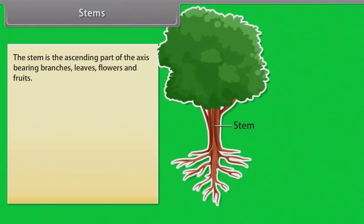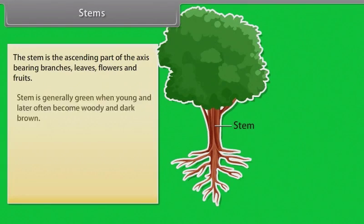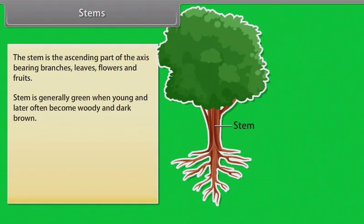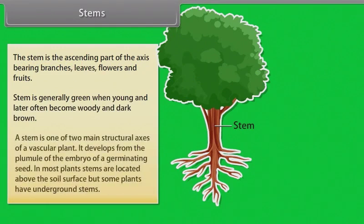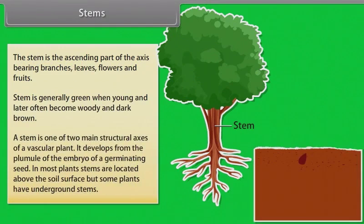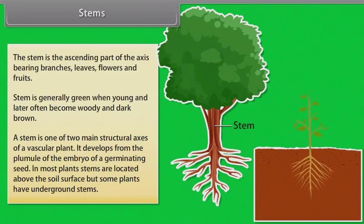The stem is the ascending part of the axis bearing branches, leaves, flowers and fruits. Stem is generally green when young and later often becomes woody and dark brown. A stem is one of two main structural axes of a vascular plant. It develops from the plumule of the embryo of a germinating seed.